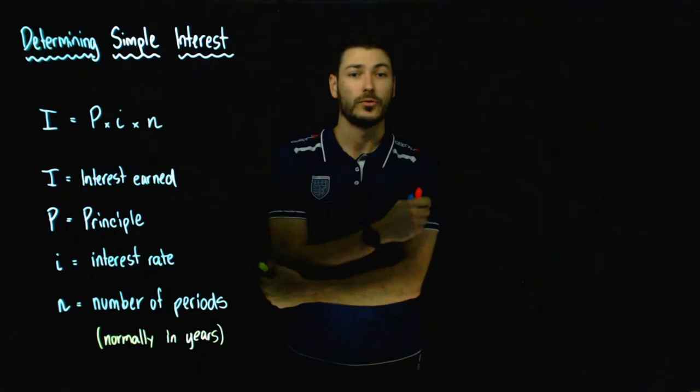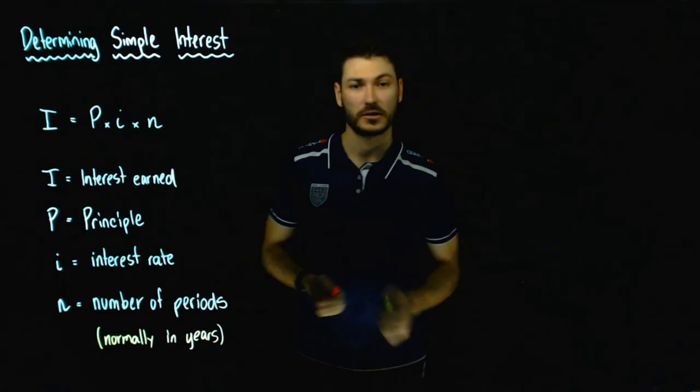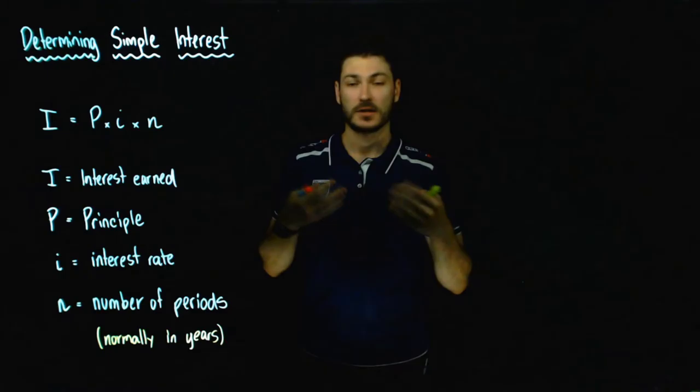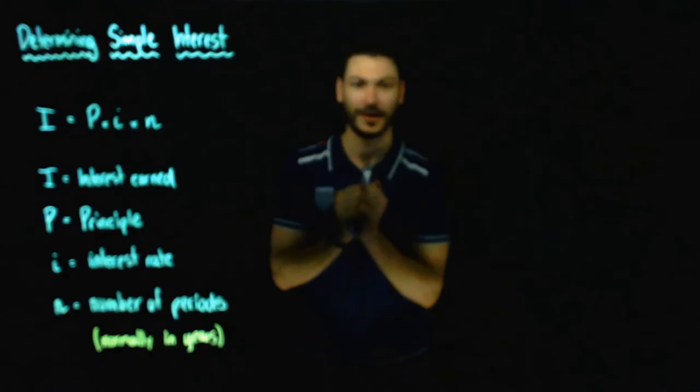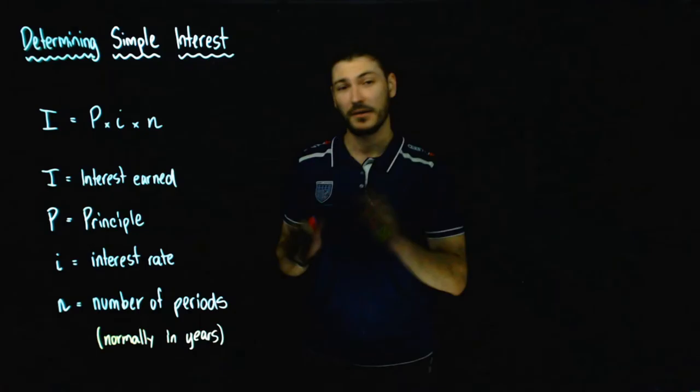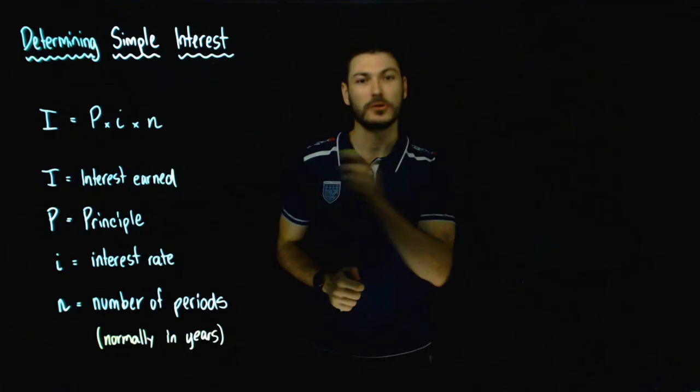So now let's create a scenario so we can actually apply this formula and use our knowledge of simple interest. Let's say I, Mr. Donoghue, don't have $30,000 but I want a $30,000 car. What I have to do is go to the bank and ask very politely, may I please borrow $30,000, and I promise I'll pay you back. And the bank will say, absolutely, we're happy to lend you $30,000, Mr. Donoghue. You're a very reputable person and we know you'll pay us back.